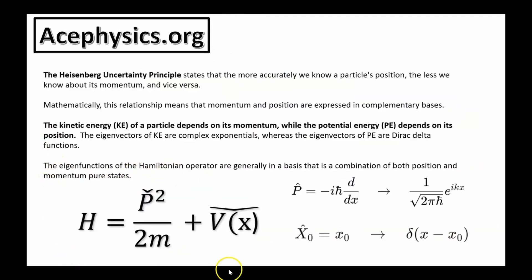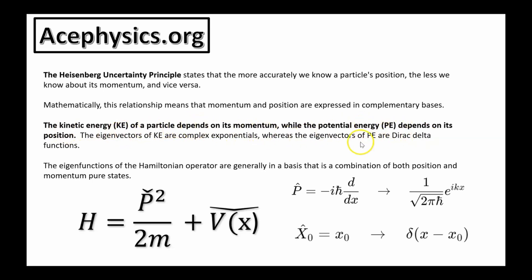On this slide, I want to talk about the Hamiltonian operator in quantum mechanics. The Heisenberg uncertainty principle states that the more accurately we know a particle's position, the less we know about its momentum, and vice versa. Mathematically, this relationship means that momentum and position are expressed in complementary bases. The kinetic energy of a particle depends on its momentum, while the potential energy depends on its position — this is true for both classical and quantum mechanics.